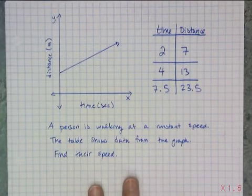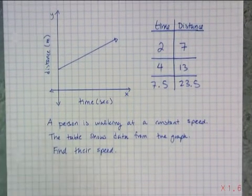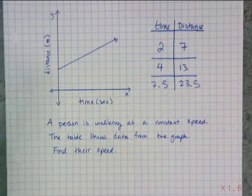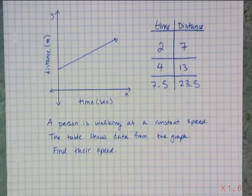So my question to you is, can you calculate speed from a single data point? And the answer is no, because you need two data points, because you have to figure out how far someone traveled in how much time. So speed is not just distance over time.